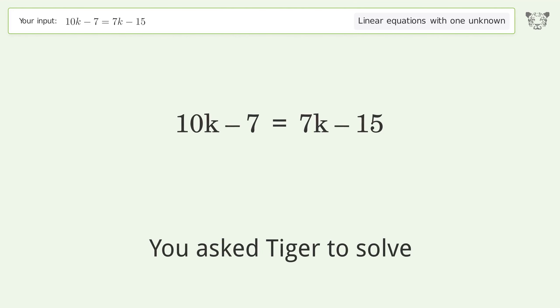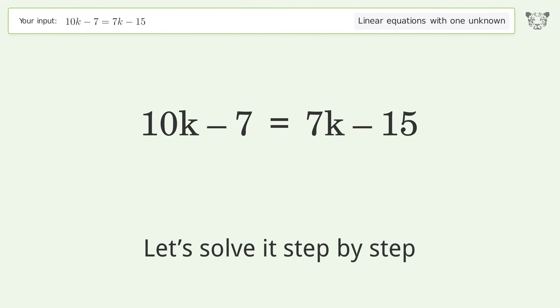You asked Tiger to solve. This deals with linear equations with one unknown. The final result is k equals negative 8 over 3. Let's solve it step by step.